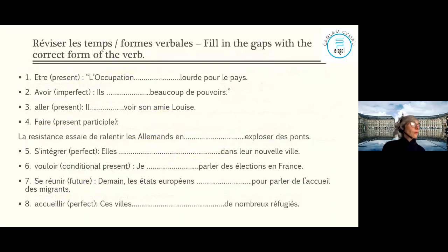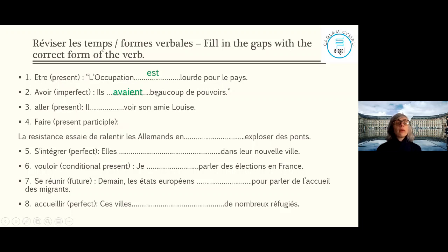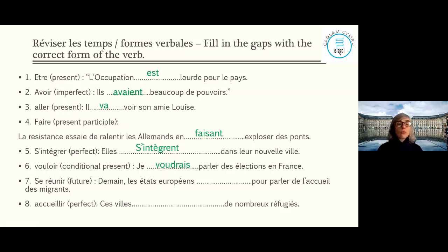Now it's your turn — do this at home in your own time. It's a fill-in-the-gap exercise: conjugate the given verbs in the specified tenses. Examples: 'être' present — 'l'occupation est lourde pour le pays'; 'avoir' imperfect — 'ils avaient beaucoup de pouvoir'; 'aller' — 'il va avoir son ami Louise'; 'faire' present participle — 'en faisant exploser les pompes'; 's'intégrer' — 's'intègre'; 'vouloir' conditional — 'je voudrais'; 'se réunir' future — 'se réuniront'.